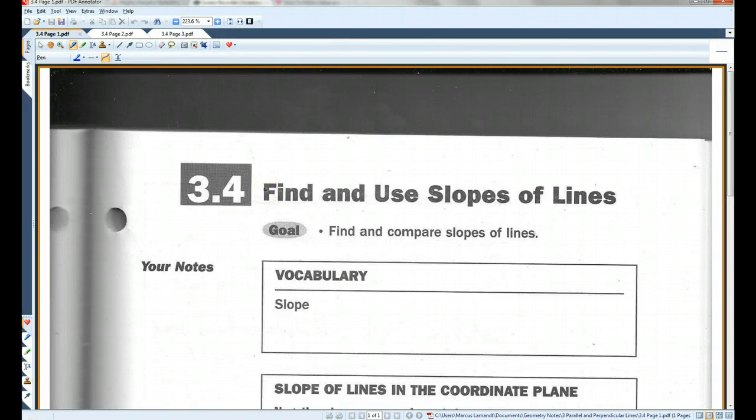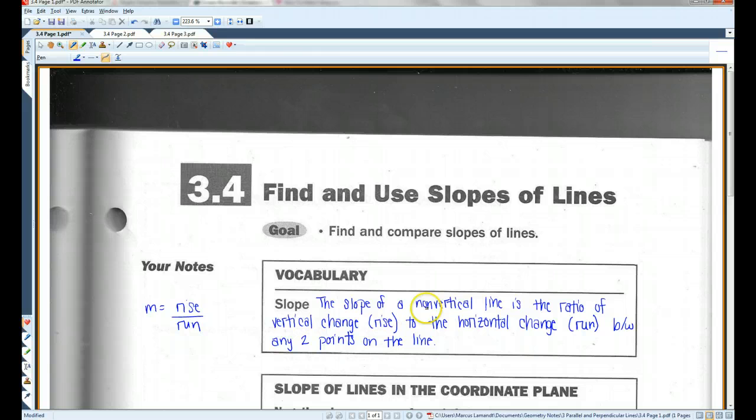Okay, 3.4, find and use slopes of lines. Most of you guys already know what slope is. Hopefully you remember this from Algebra 1. The slope of a non-vertical line is the ratio of the vertical change, or rise, to the horizontal change, or run, between any two points on the line.